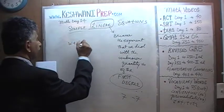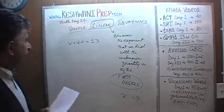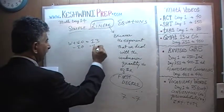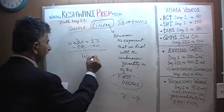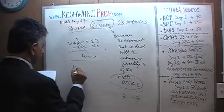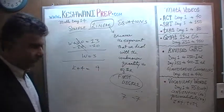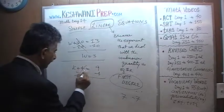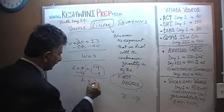W plus 10 equals 13. We subtract 10 from both sides; 10 drops out and w equals 3. Next: k plus 4 equals 9. Subtract 4 from both sides and k equals 9 minus 4, which is 5.